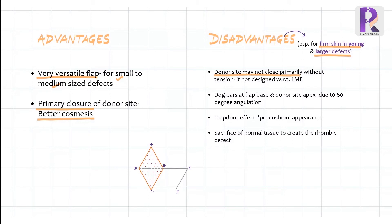Also, since in Limburg Flap a larger rotation of 60 degrees is required, there will be a kind of bunching up of tissue causing dog ear at the base of the flap and also where the flap donor site is closing primarily.